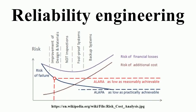Reliability engineering is engineering that emphasizes dependability in the life cycle management of a product. Dependability, or reliability, describes the ability of a system or component to function under stated conditions for a specified period of time. Reliability may also describe the ability to function at a specified moment or interval of time, and represents a sub-discipline within systems engineering. Reliability is theoretically defined as the probability of success, as the frequency of failures, or in terms of availability, as a probability derived from reliability, testability, and maintainability.